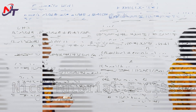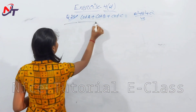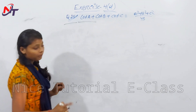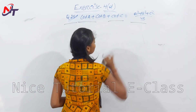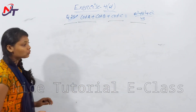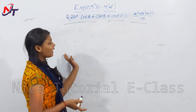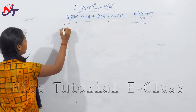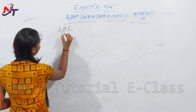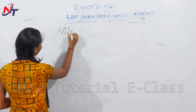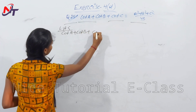Next question number 25: prove that cot A + cot B + cot C = (a² + b² + c²)/(4Δ). We need to prove LHS equals RHS. LHS: cot A + cot B + cot C.